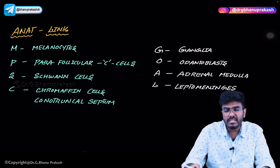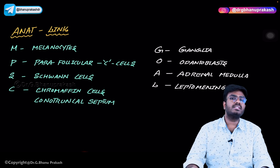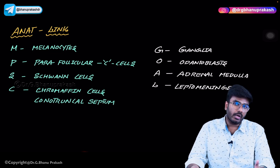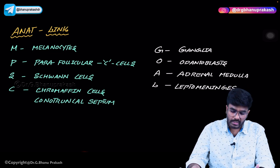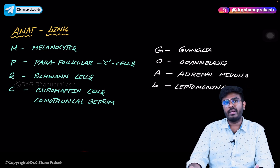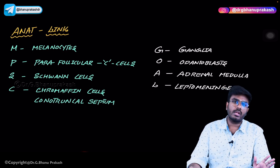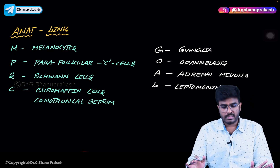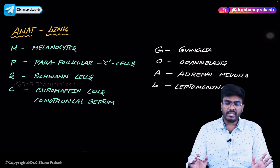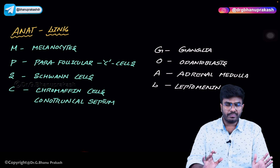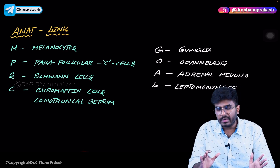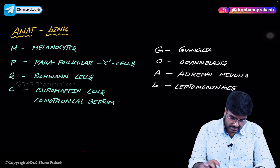L is for leptomeninges. Leptomeninges include the arachnoid and pia — not the dura. The arachnoid and pia mater together are called leptomeninges, and they are also derived from the neural crest cells. For your exam, you need to know these are the structures derived from the neural crest.